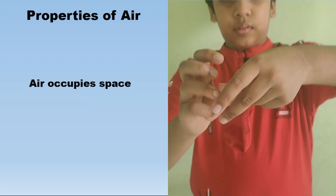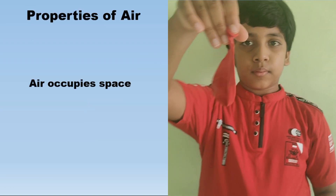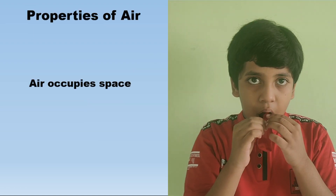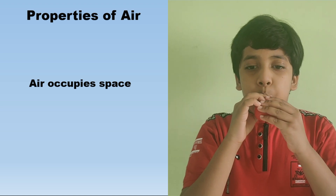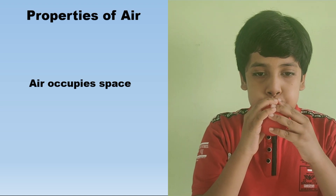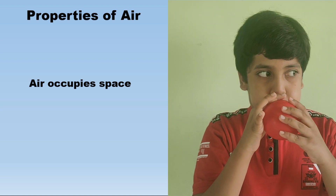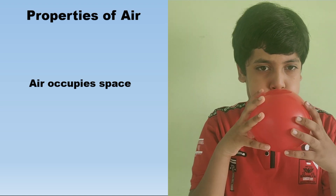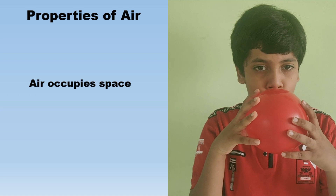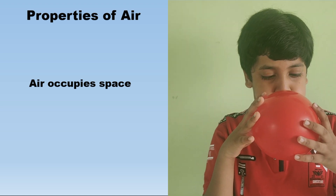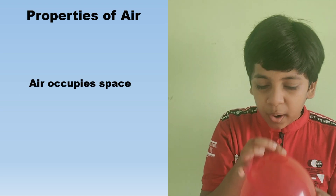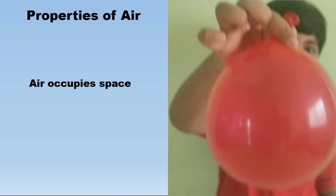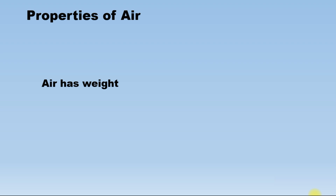The first property is that air occupies space. To prove this, take a normal balloon and blow air into it. As you blow air, the balloon expands, and the space inside the balloon is occupied by air. This proves that air occupies space.